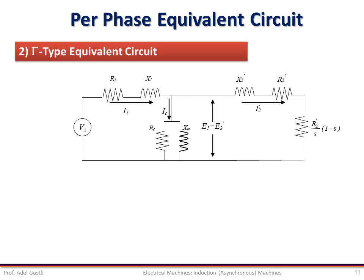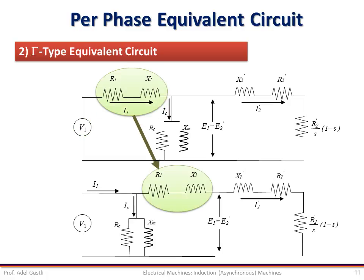This is the GAMMA, or PI-type, equivalent circuit. The assumption made here is that the terminal voltage is much higher than the voltage drop across the stator impedance, so we can move the shunt branch to the terminal side. This simplifies the circuit and makes it easier to calculate the excitation current directly using the terminal voltage divided by the shunt branch impedance. The rotor current is also calculated by dividing the terminal voltage V1 by the series impedances representing the stator and rotor winding impedances.